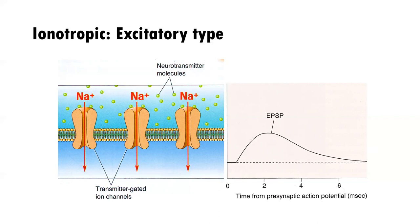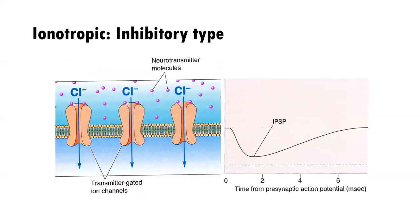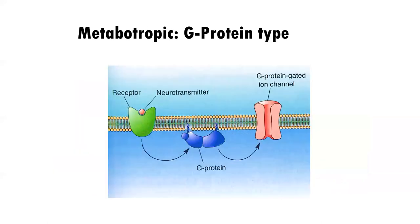The ion channels — I like to call them hot dog buns — open because of a neurotransmitter binding, and then positively charged ions enter into the neuron. If enough of those ions enter, you have action potential. In the inhibitory type, the neurotransmitter binds to a receptor and the ion channel that opens this time receives negatively charged ions. When this happens, there is less chance of action potential because it is inhibitory — meaning less action potential — since the postsynaptic neuron is already negative, you need a positive charge for it to fire.